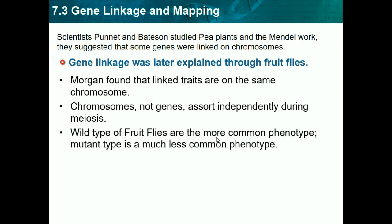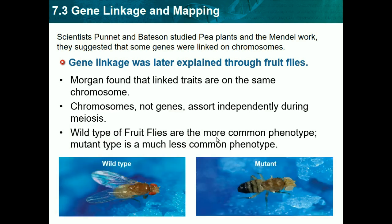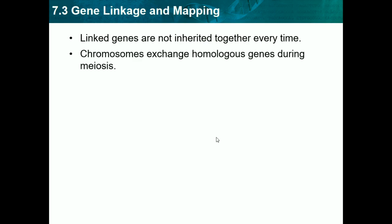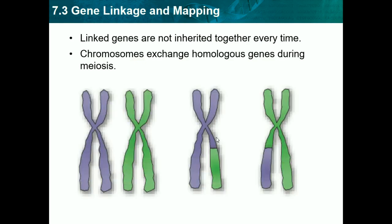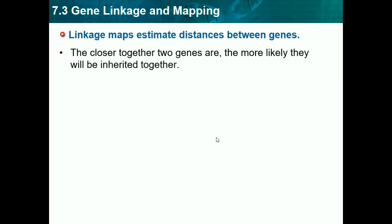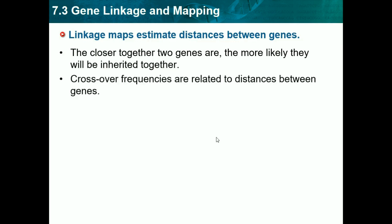Wild type fruit flies are the most common phenotype; mutant type is much less common. Linked genes are not inherited together every time — chromosomes exchange homologous genes during meiosis through crossing over. We already learned about crossing over in the last chapter. Linkage maps estimate distance between genes: the closer together two genes are, the more likely they will be inherited together.